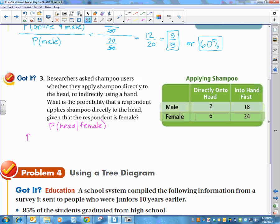Applying our formula, that means I'm going to find the probability of a person applying the shampoo to their head and being female, over the probability of the person being female. We have to add up all those people. Sometimes it's helpful to go back and look at the problem. They didn't tell us how many people, but 18 plus 2 is 20, 24 and 6 is 30, so 20 and 30 is 50. So we have a total of 50 people each time. What is the probability that they put it on their head and they're female? It's 6. What's the probability that they're female? 24 plus 6 is 30.